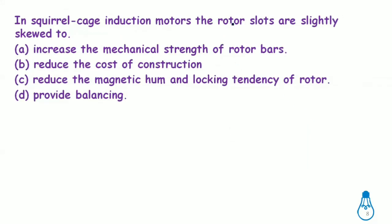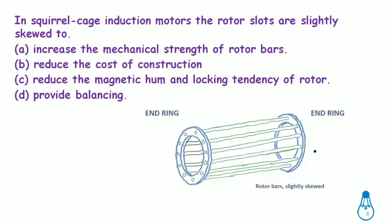In a squirrel cage induction motor, the rotor slots are slightly skewed — meaning the rotor bars are not parallel to the shaft but placed at some angle. The main reason for skewing is to reduce magnetic humps and locking tendency. Locking tendency means the rotor tends to lock at a particular speed, and skewing the rotor bars helps avoid this tendency.